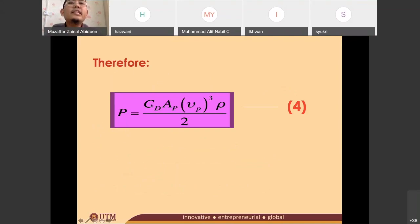And CD is the drag of coefficient. Drag of coefficient is actually, in Malay, we call it as perkali seretan.